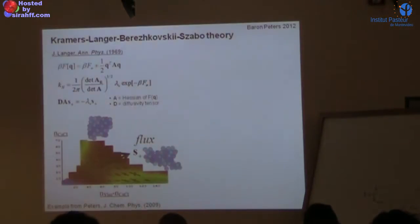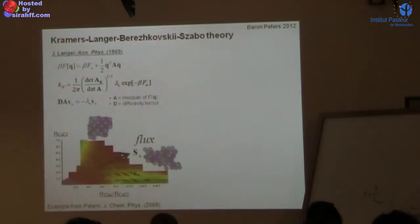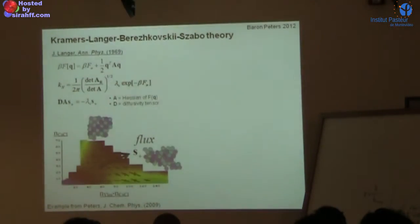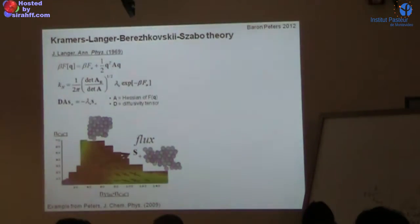Jim Langer proved that the rate of passage over this barrier in the multidimensional system — the multidimensional generalization of Kramers' theory — is given by an expression containing the activation free energy, an eigenvalue lambda, and something corresponding to the frequencies in the Vineyard formula, but now as determinants of matrices on the free energy surface. Lambda_+ is the one negative eigenvalue of the matrix DA, where D is the diffusion tensor. The free energy alone is not the whole story: we need to know how fast you can move in different directions to compute a rate constant.